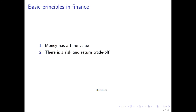The second principle is risk and return trade-off. Return is the money you can make from an investment. Risk refers to uncertainty — you might earn a lot, but you might also lose money. The risk-return trade-off means that if you want a higher return, you have to take more risk. And conversely, if you take more risk, you can potentially expect to make more money.